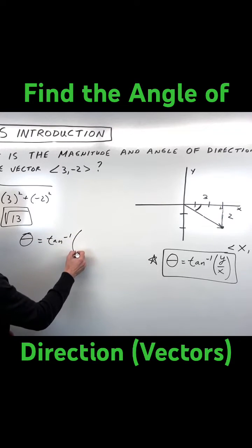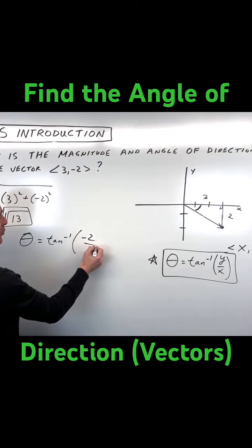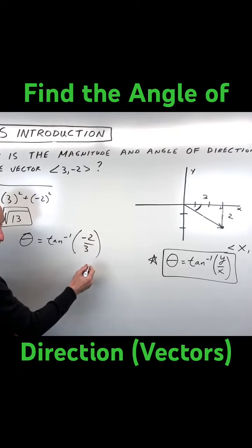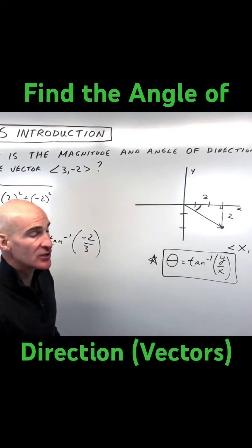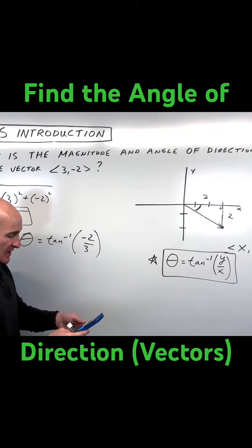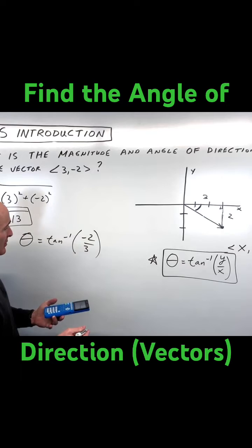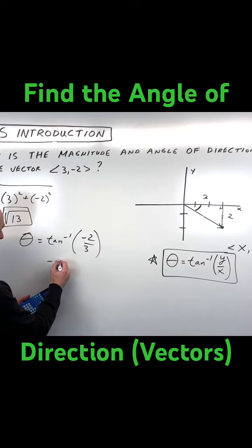to the tangent inverse of y over x. Now I'm going to go to the calculator here and I'm going to make sure that I'm in degrees and I'm just going to take the tangent inverse of negative 2 divided by 3 and I'm getting about, I'm going to round to the nearest tenth here, I'm going to get negative 33.7 degrees.